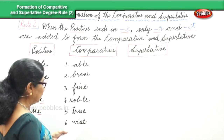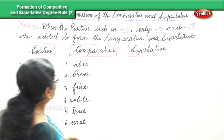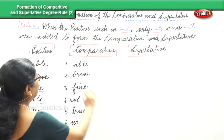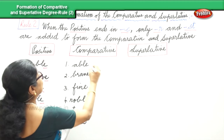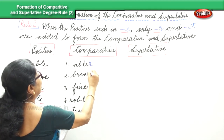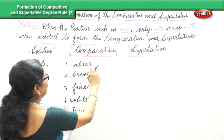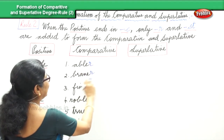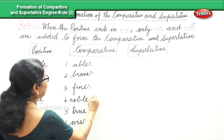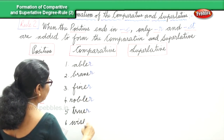Okay, now — only R is added to form the comparative: ABLE, BRAVE, FINE, NOBLE, TRUE, and WISE.